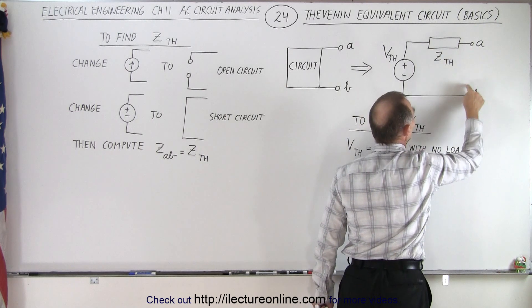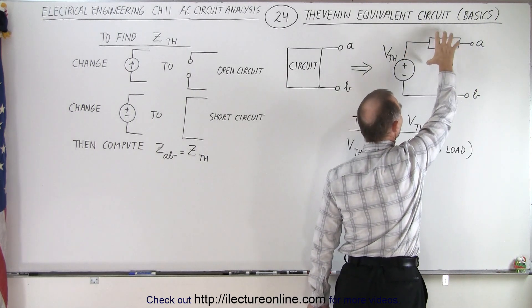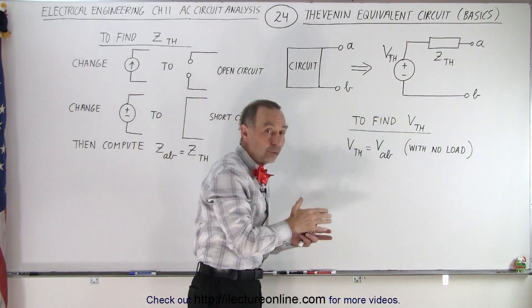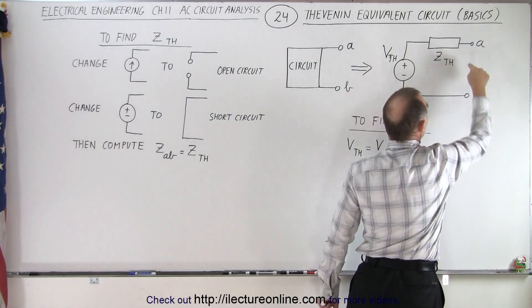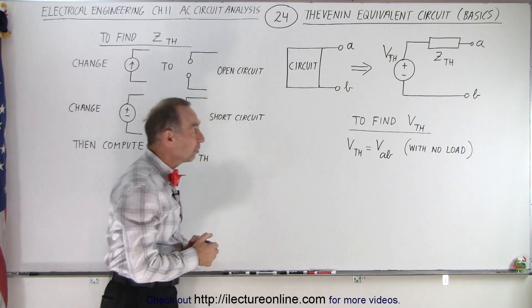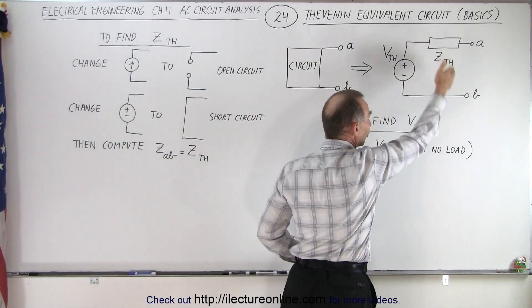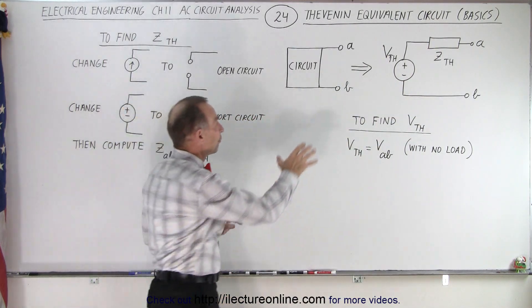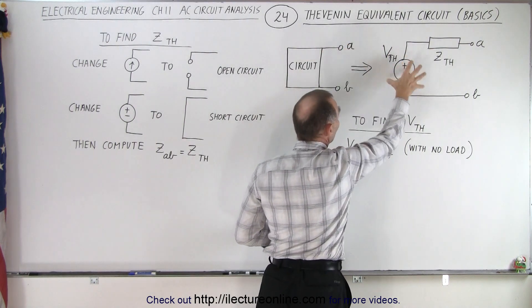And at that point you can see that it's very easy. Once you have a source like this with a series impedance, it's very easy to find the current through A and B when you apply a load and to find the voltage between A and B. You can see it's very easy to solve the circuit once you've converted it into what we call the Thevenin equivalent circuit.